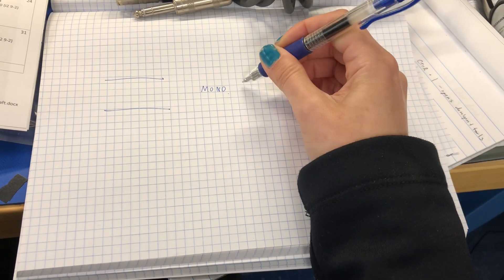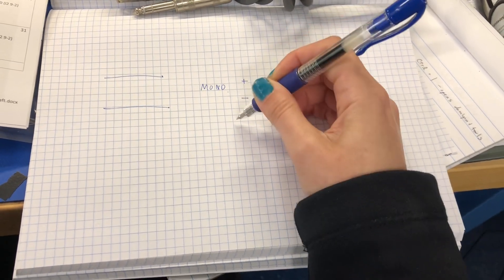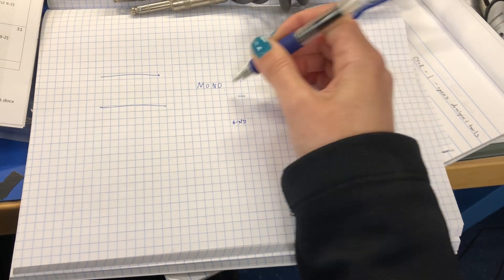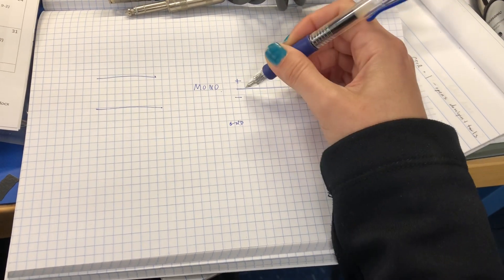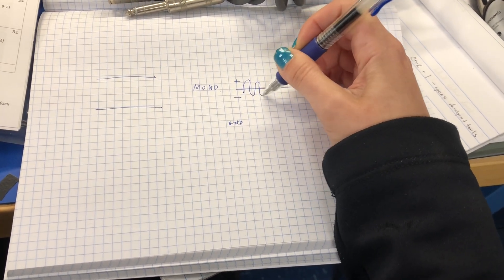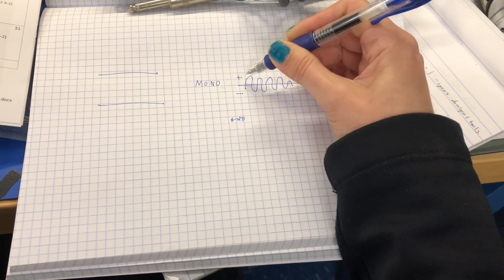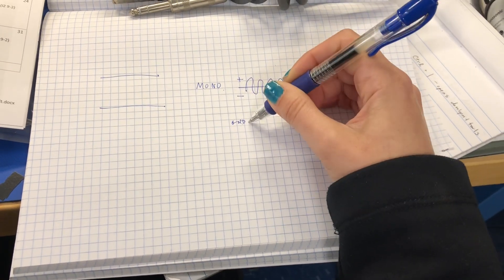So the mono is expecting positive, negative, and ground. That would just mean it only wants to see one waveform, positive and negative, and a ground.